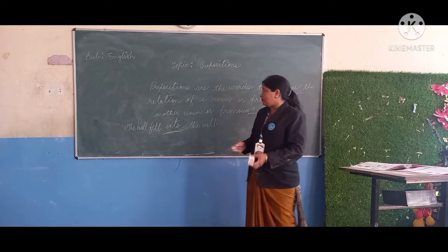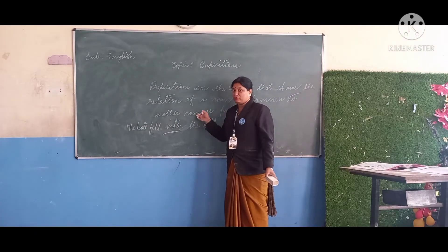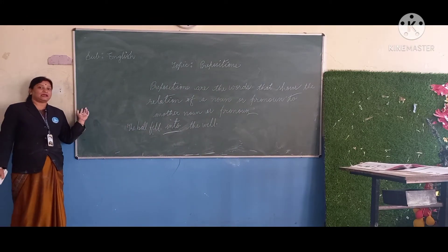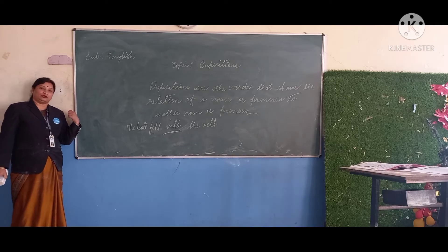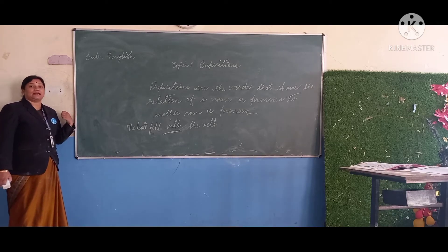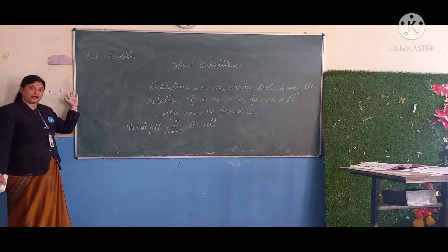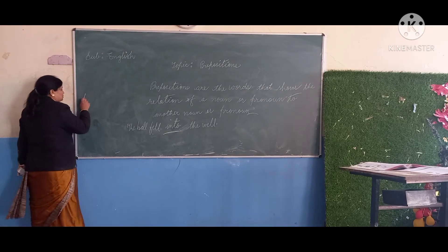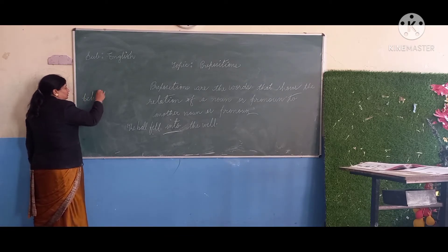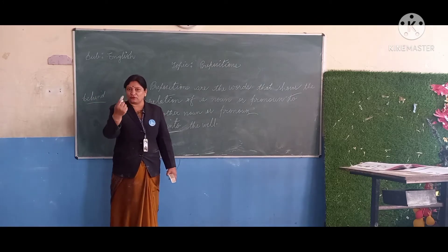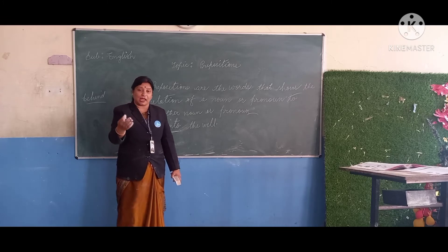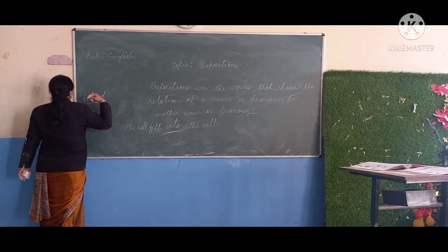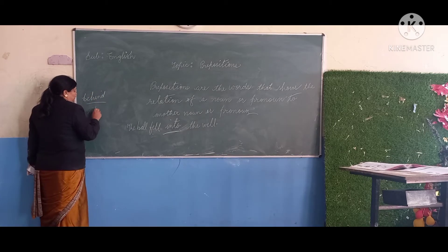When something is near, for example, the blackboard is near the teacher. I am standing beside the blackboard, and the ball is behind the blackboard. The camera is in front of me — I am standing here and the camera is here. And if the camera is behind me, then we use 'behind'. So: near, beside, behind, in front of — these are prepositions showing position.